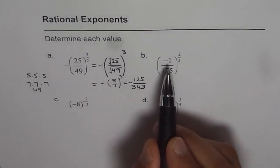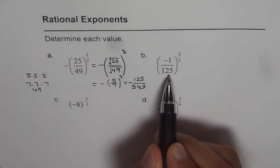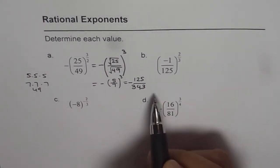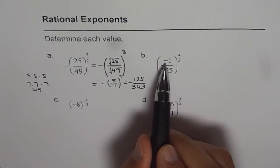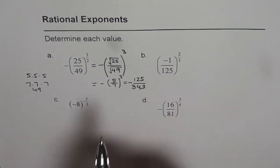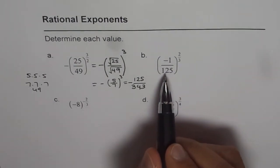Let's do part B, which is (-1/125) to the power of 2 over 3. As you can see, this negative number is inside the bracket. So the exponent is applied on the negative number also. So in this case, we should always do the radical first and then the square.